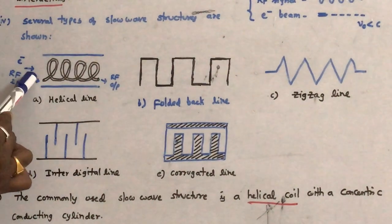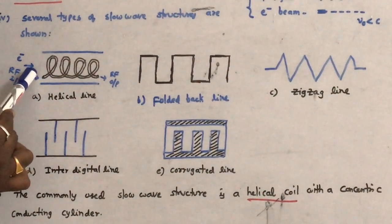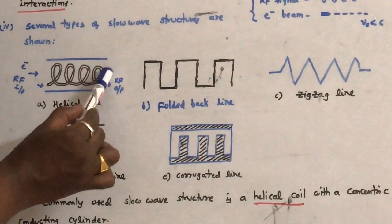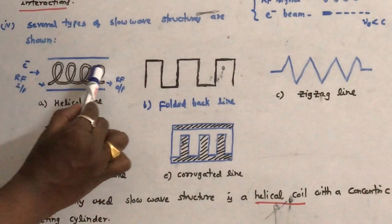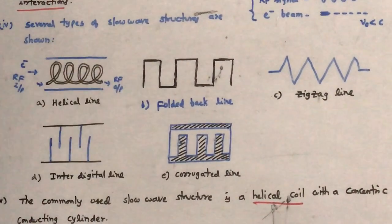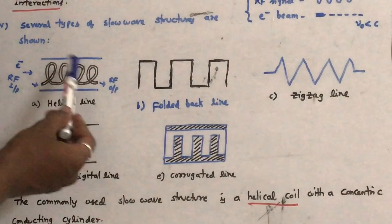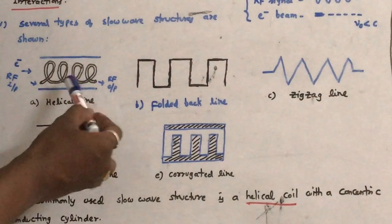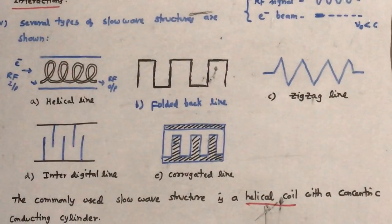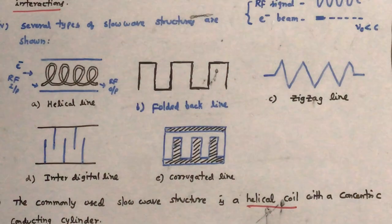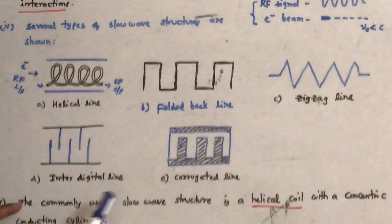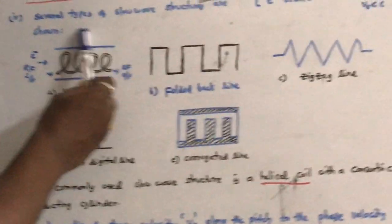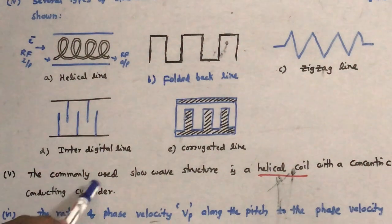For example, if you consider the helical line, RF input is given to the tube at one end and the RF output is taken at the other end. The electron beam will travel through this helical coil. There will be an interaction between this electron beam and the RF signal travelling in the tube, due to which the amplified RF signal will be obtained. The commonly used slow wave structure is the helical coil within a concentric conducting cylinder, where the RF input is given to this cylinder.